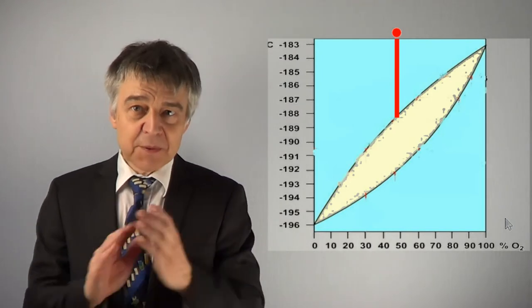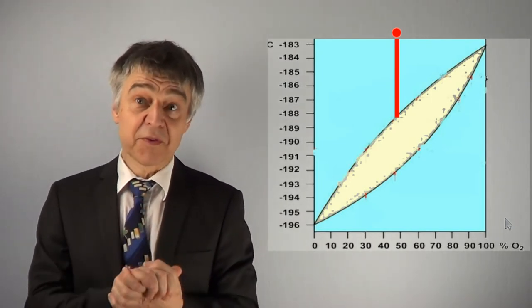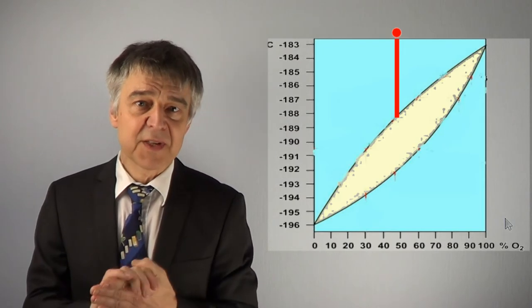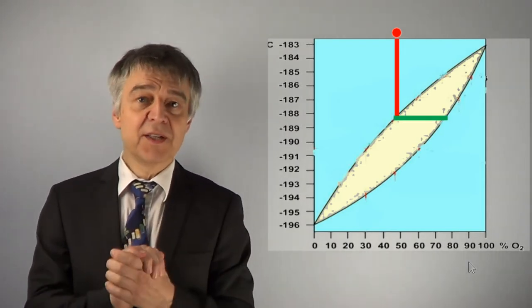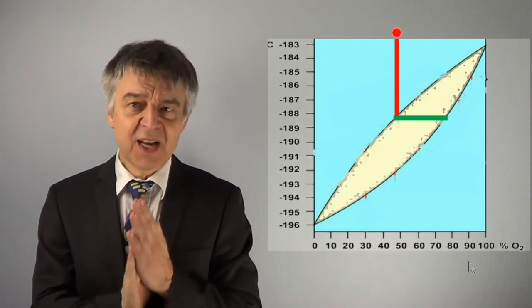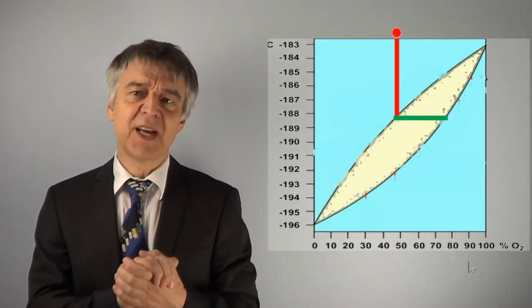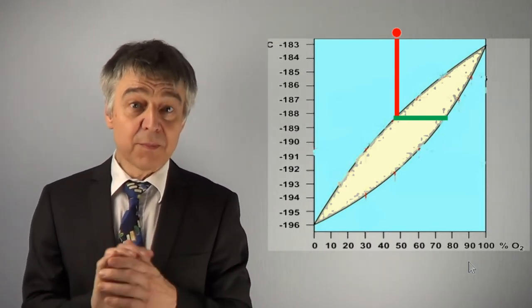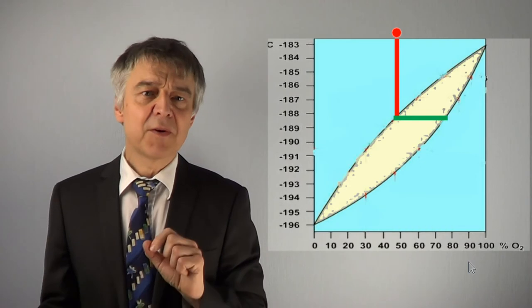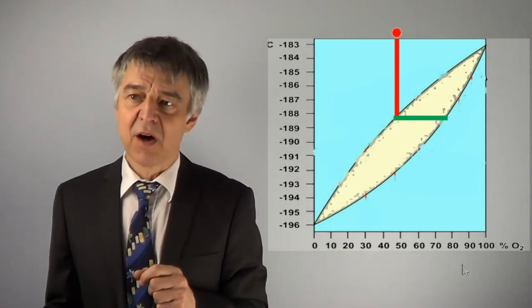The composition of these liquid droplets is not 50-50, such as the gas phase, but is determined by the tie line drawn here in green color. The tie line at negative 188 degrees Celsius intersects the other binodal, the boiling point curve, at about 80% oxygen.